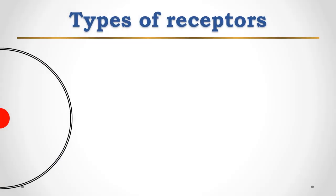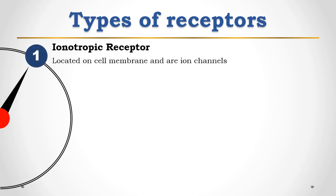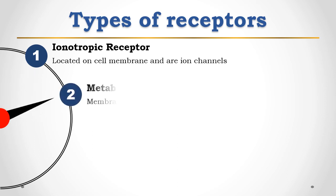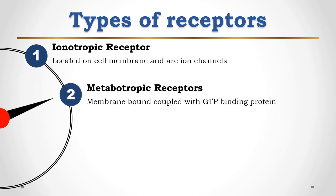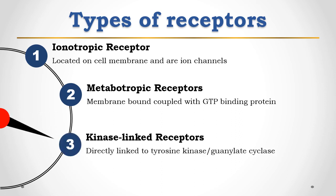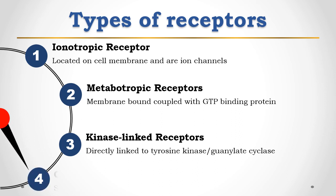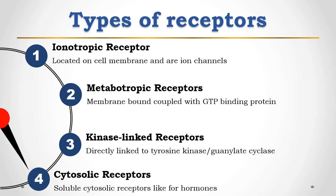As we know, receptors are of four types: one is ionotropic receptors, second is metabotropic receptors, third is kinase-linked receptors, and the last one is cytosolic receptors.